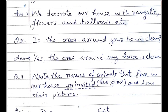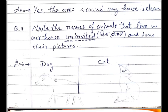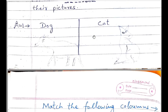Question number eleven: Write the names of animals that live in our house uninvited and draw their pictures. उन जानवरों के नाम लिखिए जो बिना बुलाए हमारे घर में आ जाते हैं. Answer: Dog — कुत्ता — हम नहीं भी पालते हैं तब भी दरवाजे पर आ जाता है. Cat — बिल्ली — ये बिना बुलाए आ जाते हैं. Uninvited का मतलब है बिना बुलाए जो आते हैं.